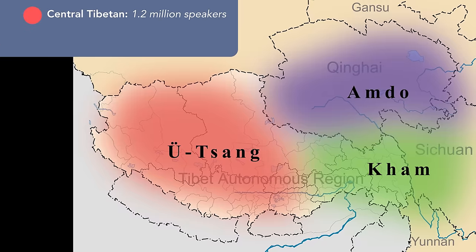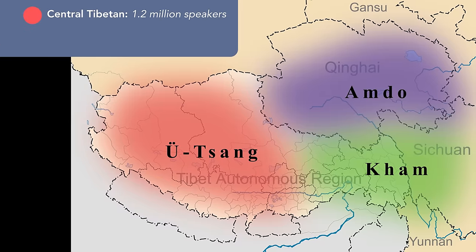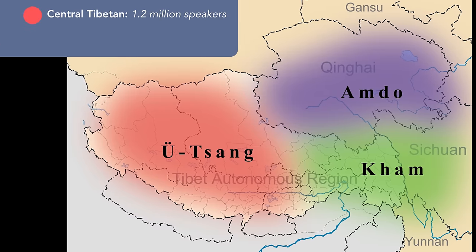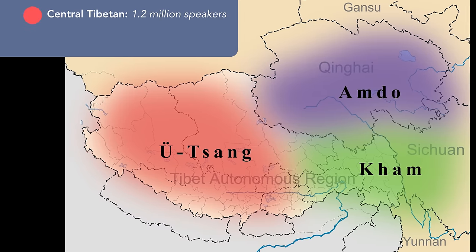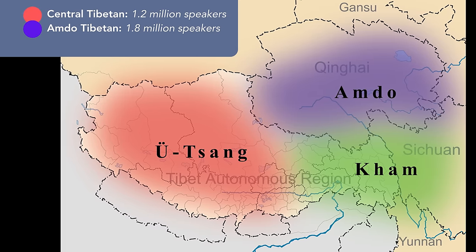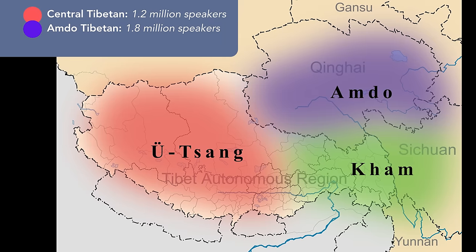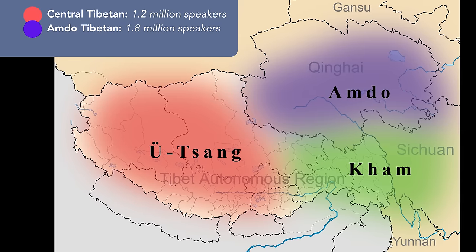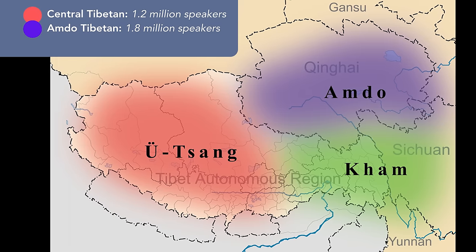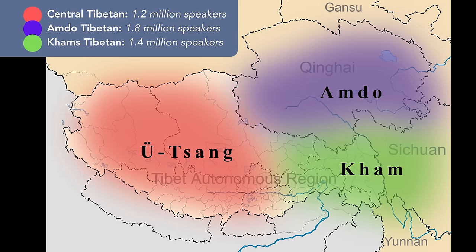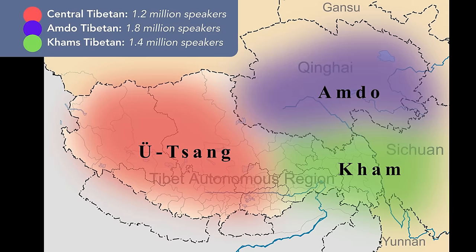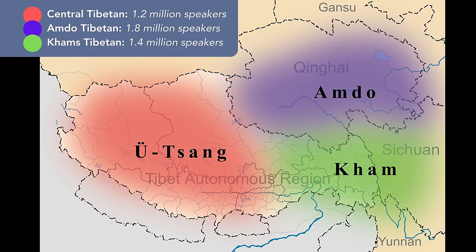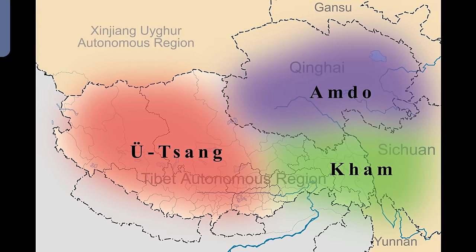First, some official info. Tibetan is not just one language, but at least three. Central Tibetan, spoken by 1.2 million people, mostly in the Tibet autonomous region. Amdo Tibetan, spoken by 1.8 million people in Qinghai, Gansu and Sichuan provinces of China. And Kham Tibetan, spoken by 1.4 million people in Qinghai, Sichuan and Yunnan provinces of China.